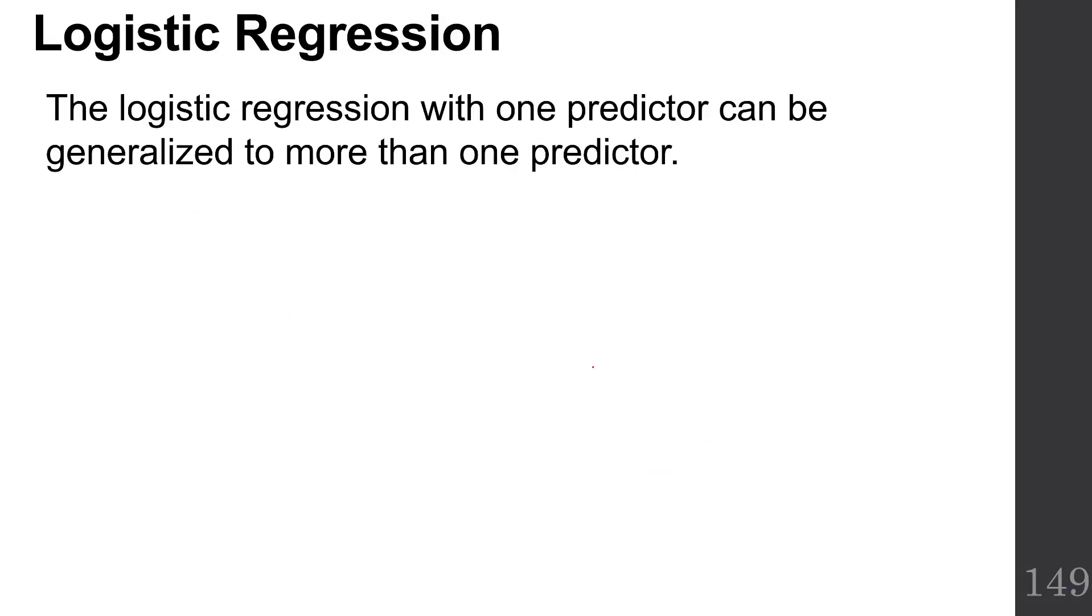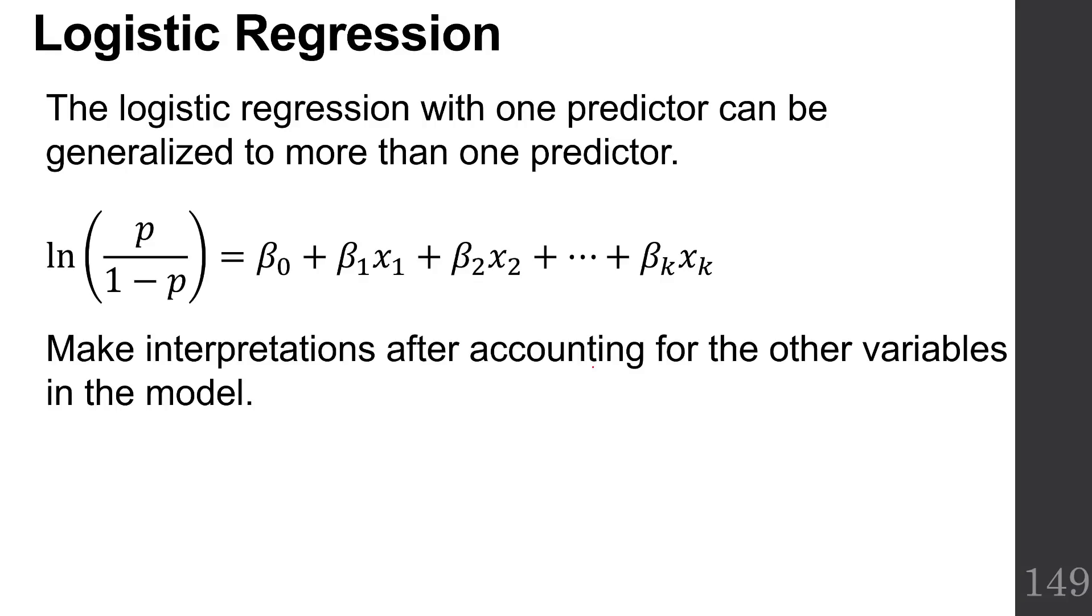We've gone over logistic regression with one predictor, but it can be generalized to more than one predictor. Then we just model it with extra beta coefficients and terms in our model. We use the same software to estimate it. And then we simply have to remember to make interpretations after accounting for the other variables in the model.